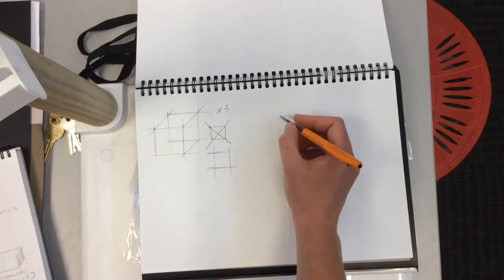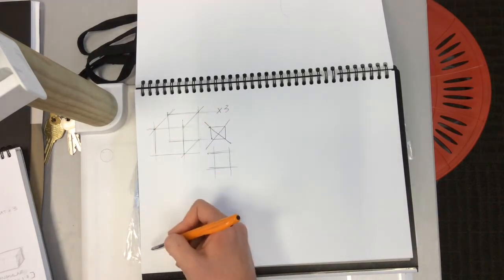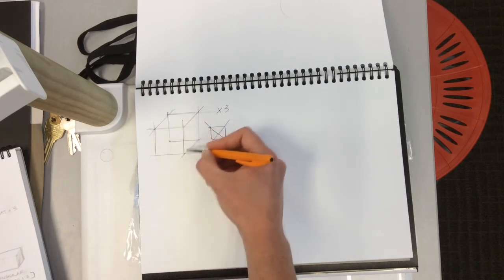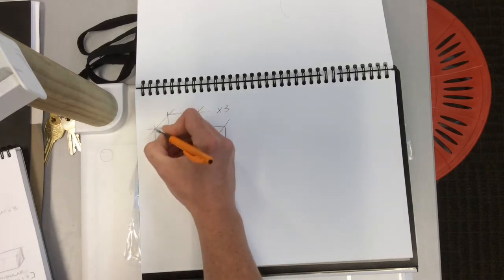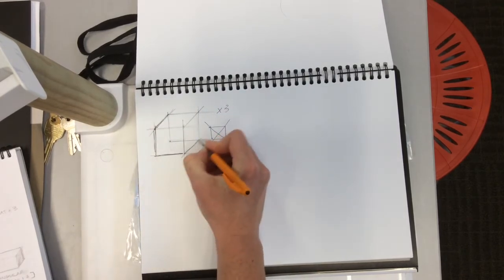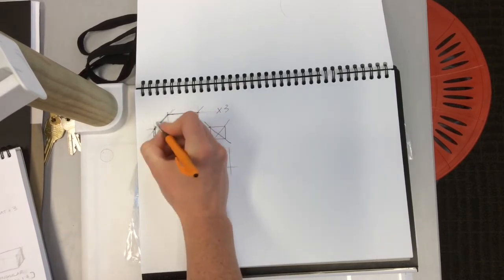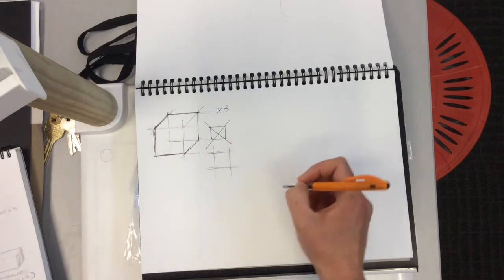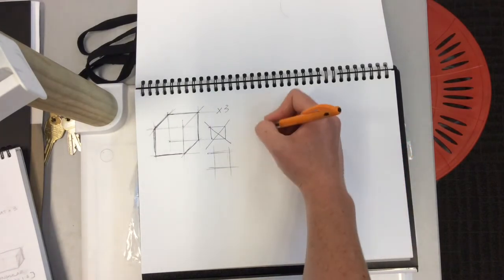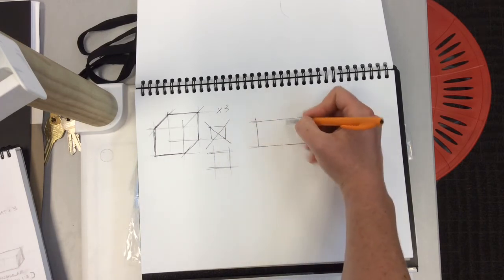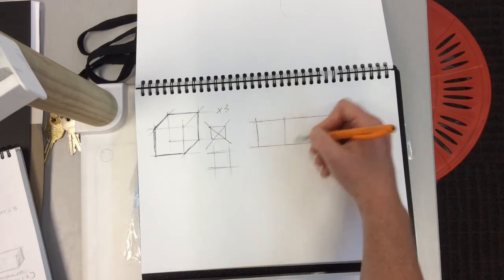Draw that three times, trying to get your proportions better each time. The gap between doesn't need to be exact, but if you try to get this corner in the middle of that front surface it's going to work out well. Once you finish, you can darken those lines so it starts to separate from the background. We're going to do the same thing with different ratios.